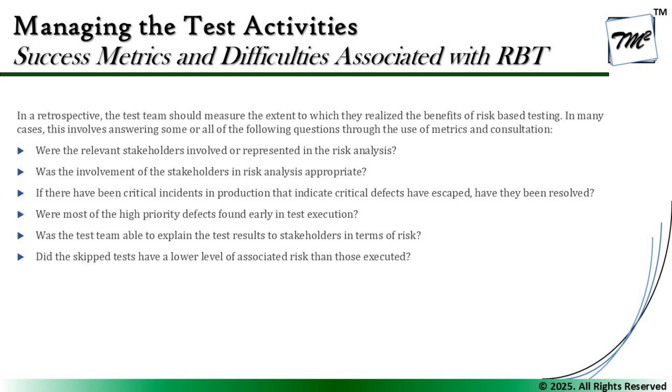Question four: were most high-priority defects found early in test execution, or late in the lifecycle? Finding them early makes resolution cheaper. If more defects were found late, we need to improve early detection. Question five: was the test team able to explain test results to stakeholders in terms of risk — quantity of risks, number open, risks yet to be mitigated?